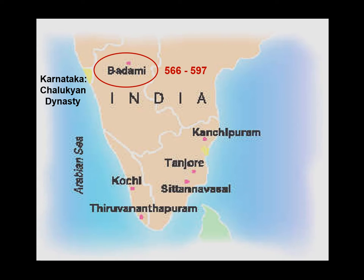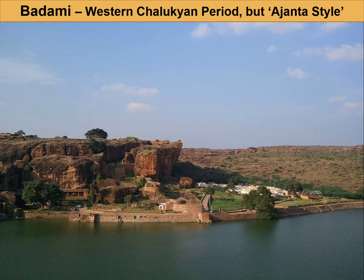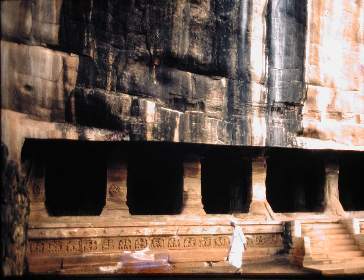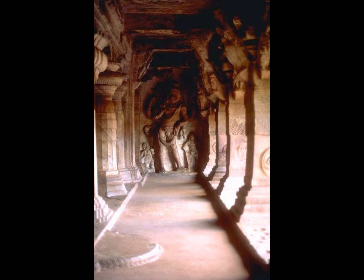The Badami caves are in northern Karnataka state, an early Hindu capital of Chalukyan rulers. Four rock-cut temples were carved out of sandstone cliffs overlooking a beautiful lake. Sandstone is softer than granite and less durable, so very few paintings remain, mostly in cave number three. These are Hindu, not Buddhist. During the 500s, devotional Bhakti movements began to flourish around the gods Shiva, Vishnu and Krishna, and Chalukyan kings who were Hindu united most of this province while Buddhism began to diminish — but the artists remained and had to find other patrons. It's called the Western Chalukyan period but is Ajanta style in art.